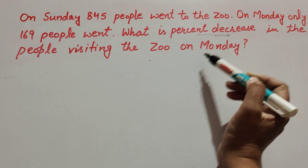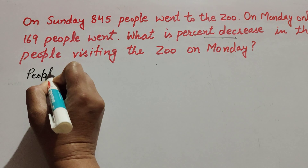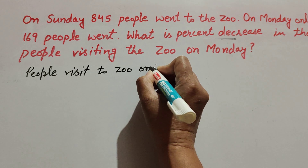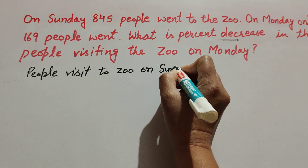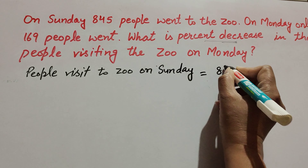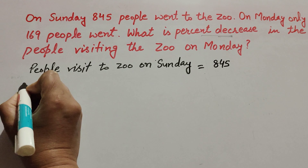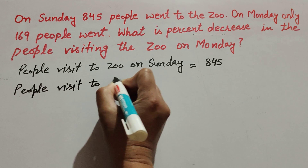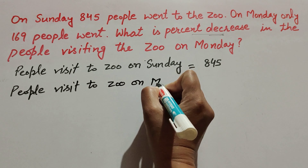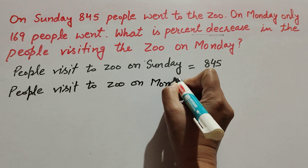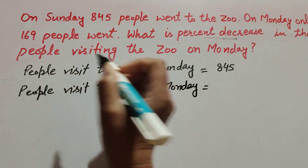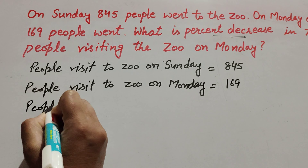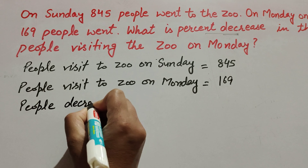People who visited on Sunday: it is equal to 845. And people who visited on Monday: it is equal to 169.